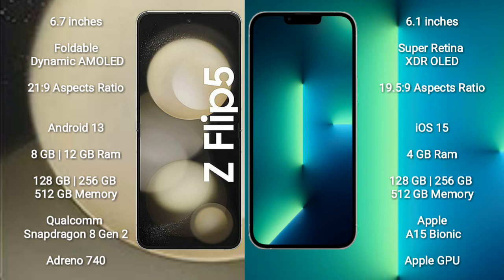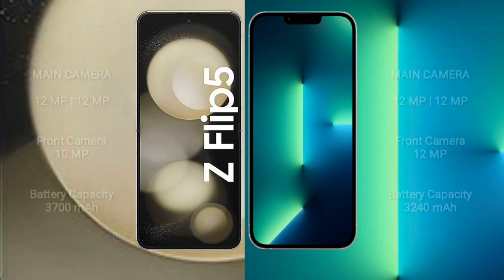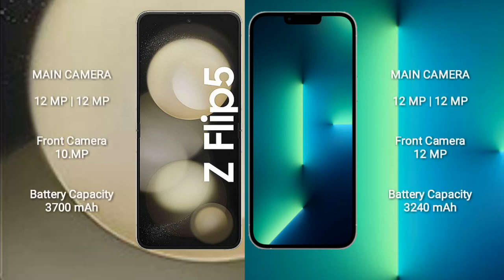Samsung Galaxy Z Flip 5 comes with 8GB RAM and 128GB to 512GB internal storage, powered by the Qualcomm Snapdragon 8 Gen 2 processor with Adreno 740 GPU. iPhone 13 comes with 4GB RAM and 128GB to 512GB internal storage, powered by the A15 Bionic processor with Apple's integrated GPU.